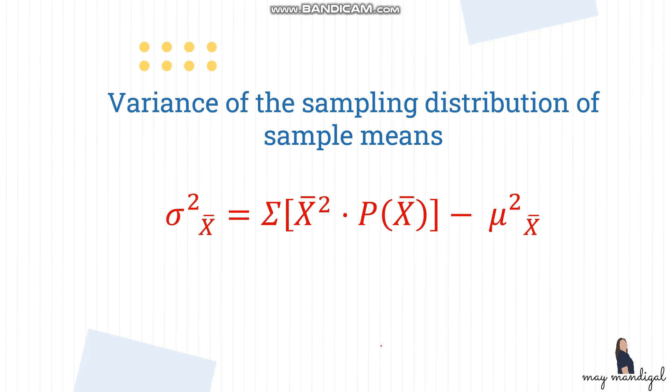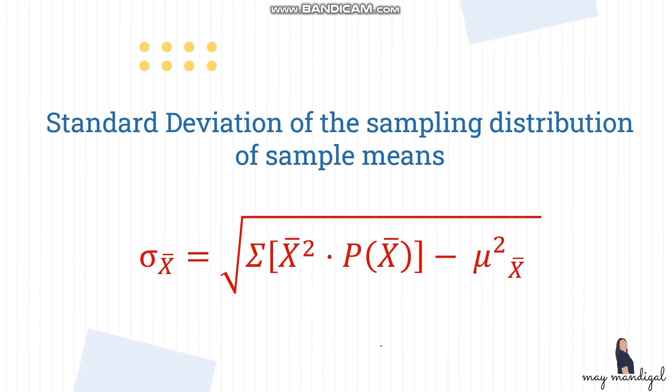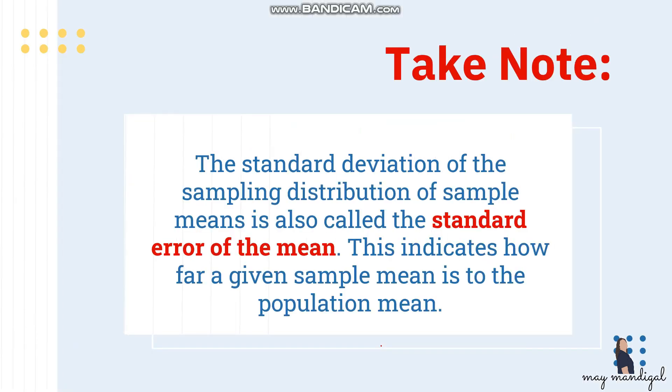For the variance of the sampling distribution of sample means, the formula is the summation of the square of x-bar times its probability, minus the square of the mean of the sampling distribution. You should have the mean of the sampling distribution first, and to get the standard deviation, just take the square root of the variance.